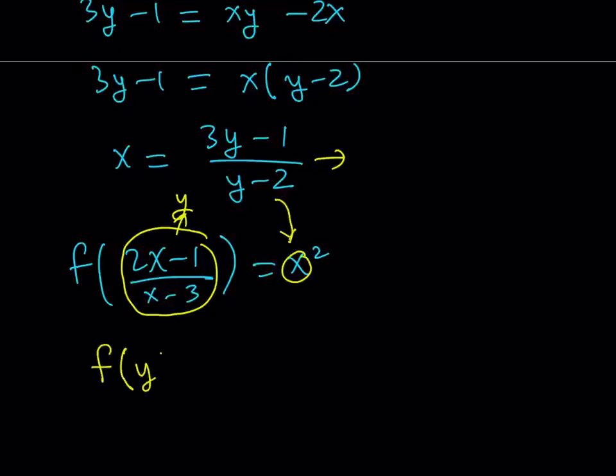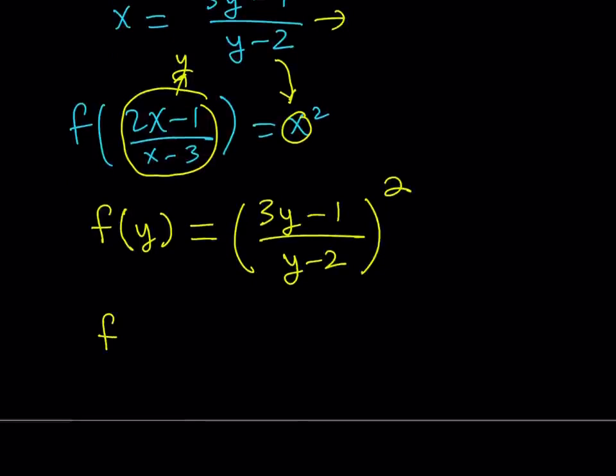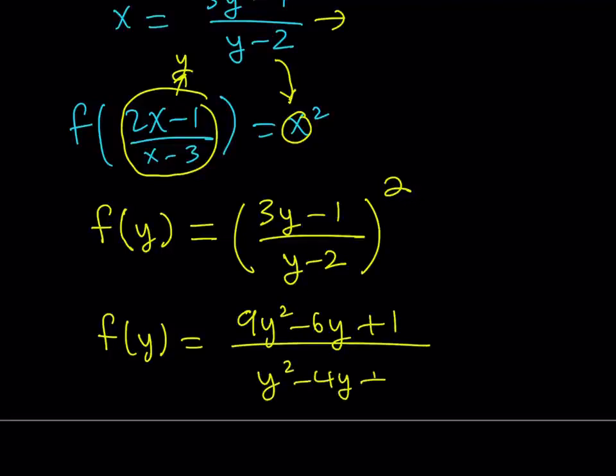So this is going to be f of y is equal to x squared, but x will be replaced with 3y minus 1 over y minus 2. And of course, I need to square that. If you square this expression, you're going to be getting f of y is equal to 9y squared minus 6y plus 1 over y squared minus 4y plus 4.